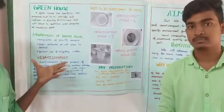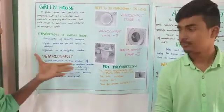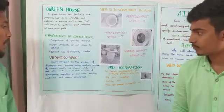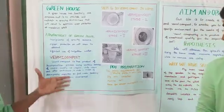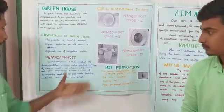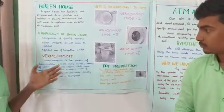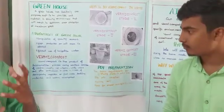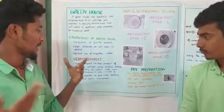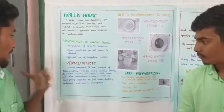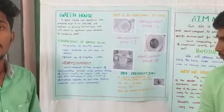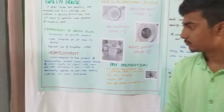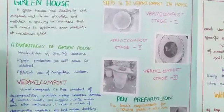Next we go to vermicompost. Vermicompost is the main theme of our project. Vermicompost is the product of decomposing processes using various species of worms, usually like red wigglers, white worms and other earthworms, to create a mixture of decomposing vegetables, fruit waste, vegetable waste, bedding materials and vermicompost.